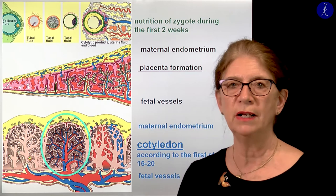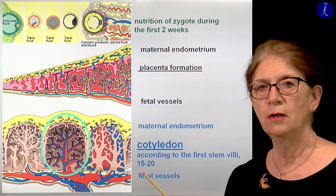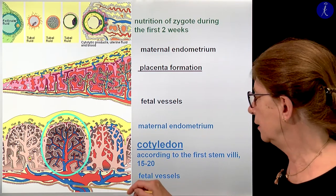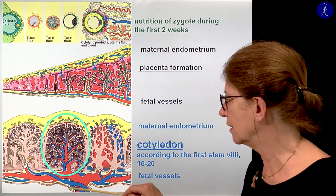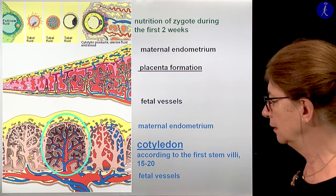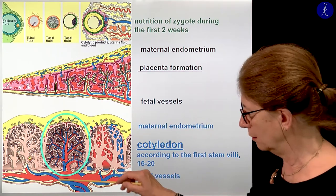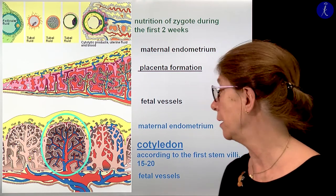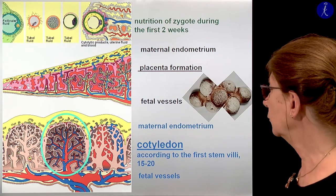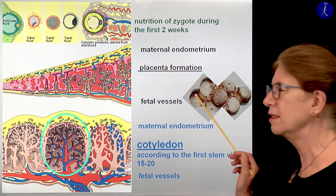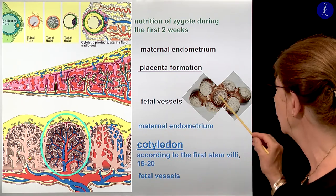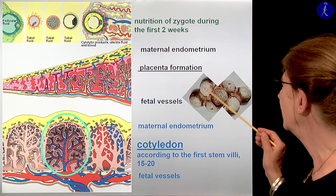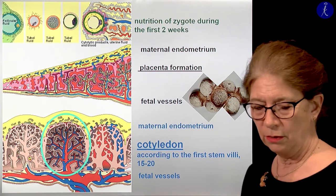Each placental septum first surrounds one original anchoring villus, but as the pregnancy proceeds the septa become more complicated with several outgrowths. These original septa surround a unit of the placenta which we call a cotyledon. According to the first stem villi, we have about 15 to 20 of these anchoring villi. There you see the fetal vessels — the blue-colored ones are the arteries bringing the used blood, and the red one demonstrates the umbilical vein which carries the fresh blood back to the baby.